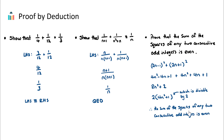Therefore, we can say the sum of the squares of any two consecutive odd integers is even because it is divisible by 2. So those are three examples. I highly recommend going to your textbook and trying a few more. The goal of proof by deduction questions is to take one side and use algebra to make it equal to the other side, then put a nice conclusion at the end. Good luck!